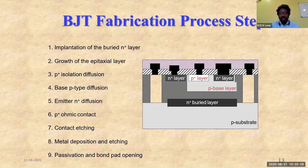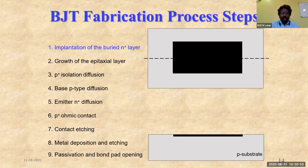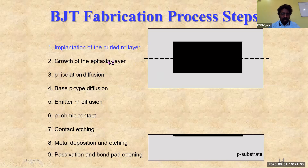For any NPN transistor, which is the most commonly fabricated type in an IC, the N-type layer serves as a collector. In order to reduce the collector resistance in the path between the epitaxial collector region and the surface, a region of highly doped, high-conductivity N-type material is created beneath the epitaxial layer.